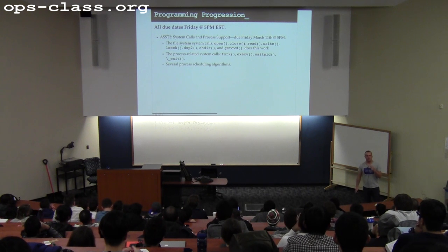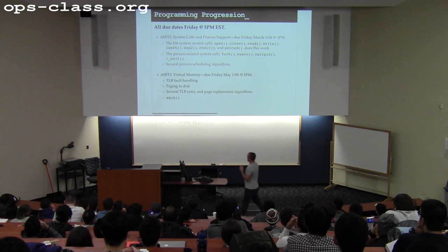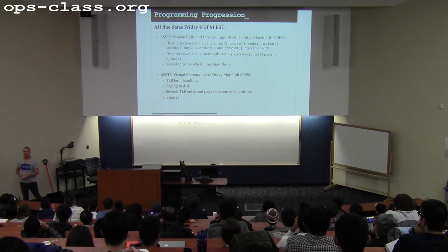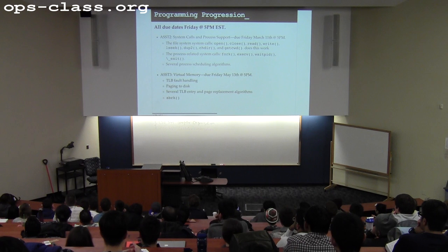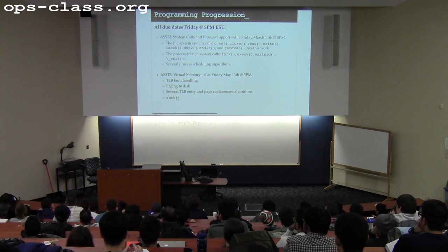Then we go on into the two big and really exciting assignments: assignment two, where you implement the system call interface for the kernel you're building, and assignment three, where you implement virtual memory. Assignment three is really the crucible of the class and by far the most fun assignment. It's a chance for you to really design a very large piece of software with a lot of internal interfaces and a lot of complexity — and it is super fun when you get it to work.